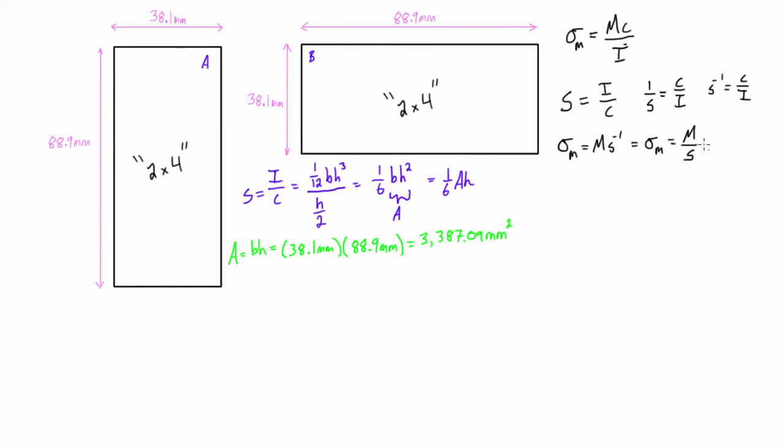Because what it basically means is that for any given moment, basically just the bigger the elastic section modulus is, then the smaller the max stress will be, or vice versa. So now let's actually just calculate what the elastic section modulus is for the cross section when it's oriented like A and when it's oriented like B.